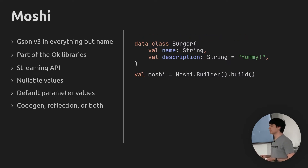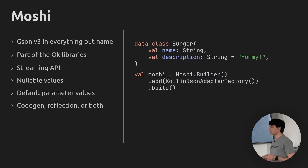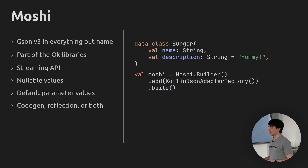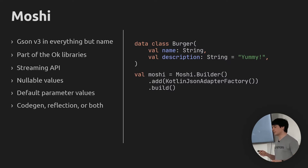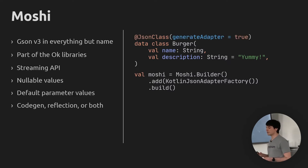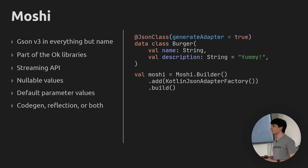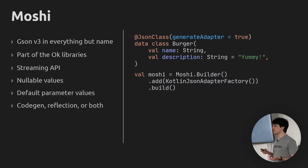I can also use Reflection — in that case, I can remove the annotation altogether and instead add the KotlinJsonAdapterFactory to my Moshi instance, which tells it how to serialize and deserialize Kotlin-based classes using Kotlin Reflection. This brings in large dependencies since Kotlin Reflect is not lightweight, so you might want to avoid it. But you can also use both at the same time — annotate some models to auto-generate adapters using KAPT, and Moshi will fall back to Reflection for everything else.